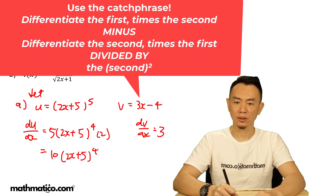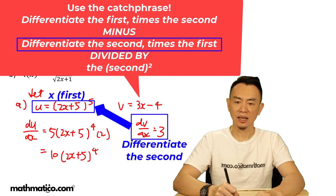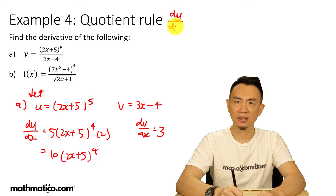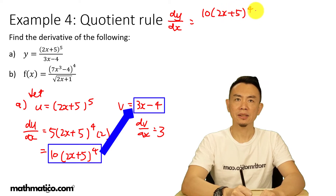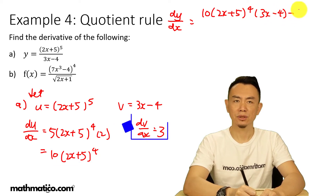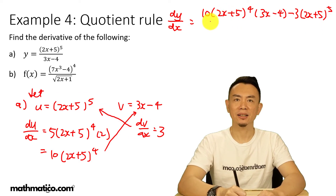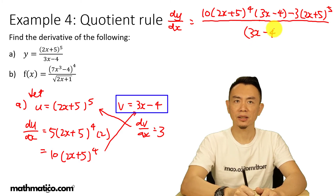So we are going to differentiate the first times the second, minus differentiate the second times the first, then divide it by the second squared. So dy/dx equals 10 times (2x plus 5) to the power of 4, times the second (3x minus 4), minus 3 times the first (2x plus 5) to the power of 5, divided by (3x minus 4) squared.